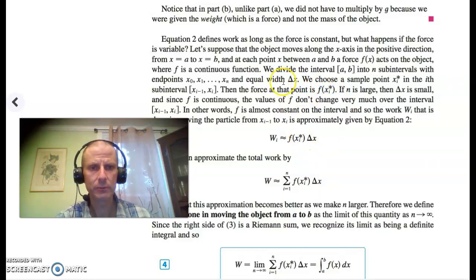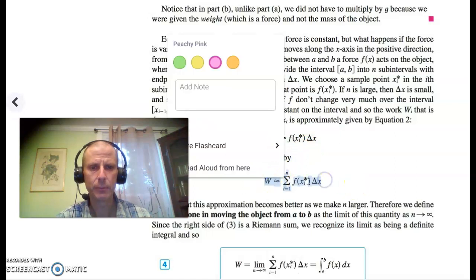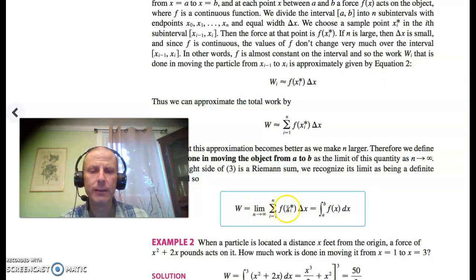Since the width of each subinterval is delta x, the work required to move the object through that subinterval is approximately f of x_i star delta x. We can get an approximation by adding up all those f of x_i star delta x's for each subinterval. By taking a limit as n goes to infinity, this turns into an exact answer which we can calculate with an integral. Work is therefore the integral from a to b of f(x) dx.